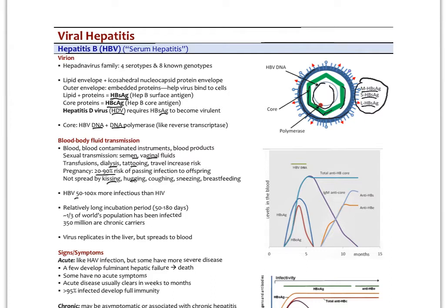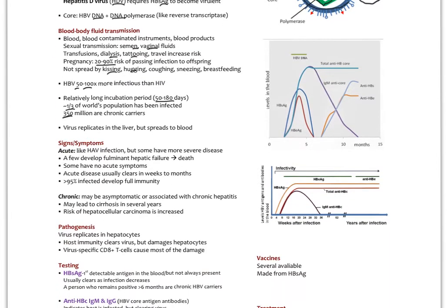It's 50 to 100 times more infectious than HIV. A lot of people are worried about HIV in the clinic. Actually, Hep B and Hep C are the ones you need to be worried about. Relatively long incubation period, 50 to up to 180 days, so up to six months. A third of the world's population has been infected and about 350 million are chronic carriers. That's a problem with Hep B: you can clear the initial infection but become a chronic carrier and spread it.